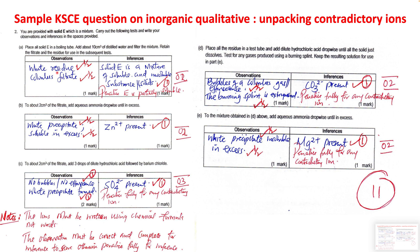Now we analyze the filtrate. To two cubic centimeters of the filtrate, add aqua ammonia dropwise until in excess. The answer is a white precipitate which is soluble in excess. There is a marking point for stating there is a white precipitate and for stating it is soluble in excess. The inference is that zinc is present. Zinc is the only cation under the syllabus that forms a white precipitate which is soluble in excess aqua ammonia.